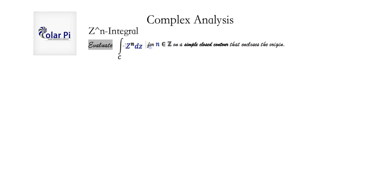In this video we're going to look at the integral of z to the n, where n is an integer. This result is going to be inclusive of the result given in the previous two videos. When n is equal to negative 1, we get the integral of 1 over z, which we saw in the last video, and when n is equal to 1, we get the integral of just z, which was the second to last video. So this is a more general result inclusive of the last two videos.